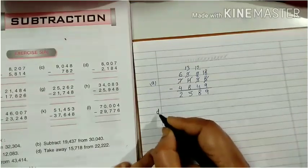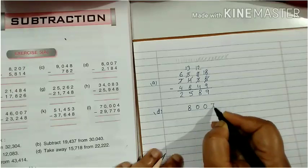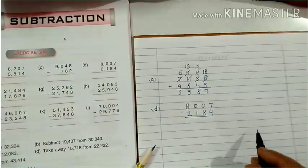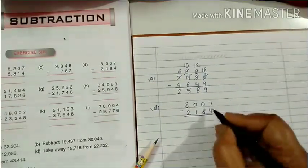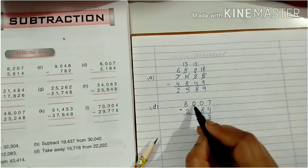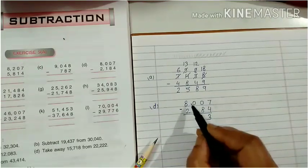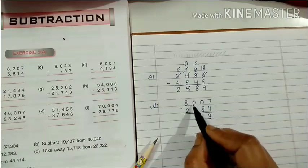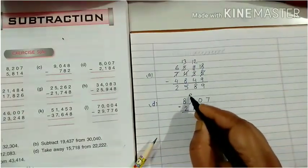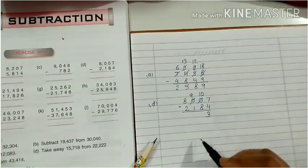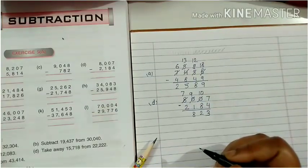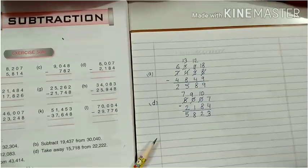Let's do Question D: 8,007 minus 2,184. So 7 minus 4 is 3. Now 0 minus 8 is not possible, so we will take a carry. There is nothing in the tens place, so it asks the hundreds place. Nothing in the hundreds place either, so it goes to the thousands place. The thousands place gives only 10s. It will become 9 in the hundreds, 10 in the tens. 10 minus 8 is 2. 9 minus 1 is 8. And 7 minus 2 is 5. So the answer is 5,823.